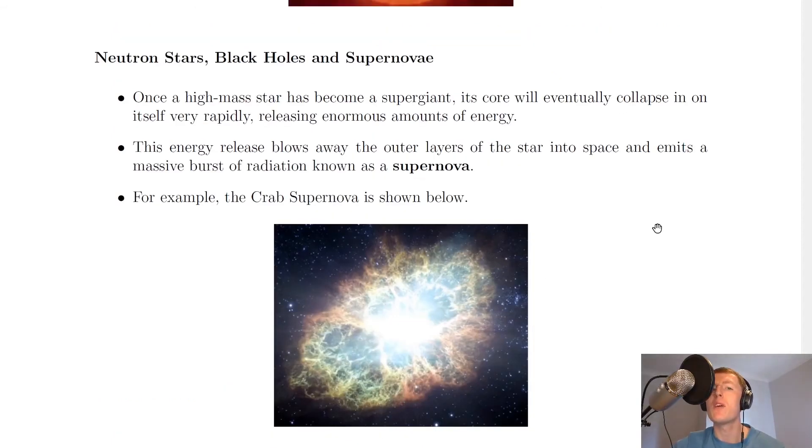Instead of becoming a white dwarf, our high mass stars are going to follow a different eventual fate. They're either going to become a neutron star or a black hole. And this leads us into neutron stars, black holes and supernovae. Once a high mass star has become a supergiant, its core will eventually collapse in on itself very rapidly, releasing enormous amounts of energy. This energy release blows away the outer layers of the star into space and emits a massive burst of radiation known as a supernova.